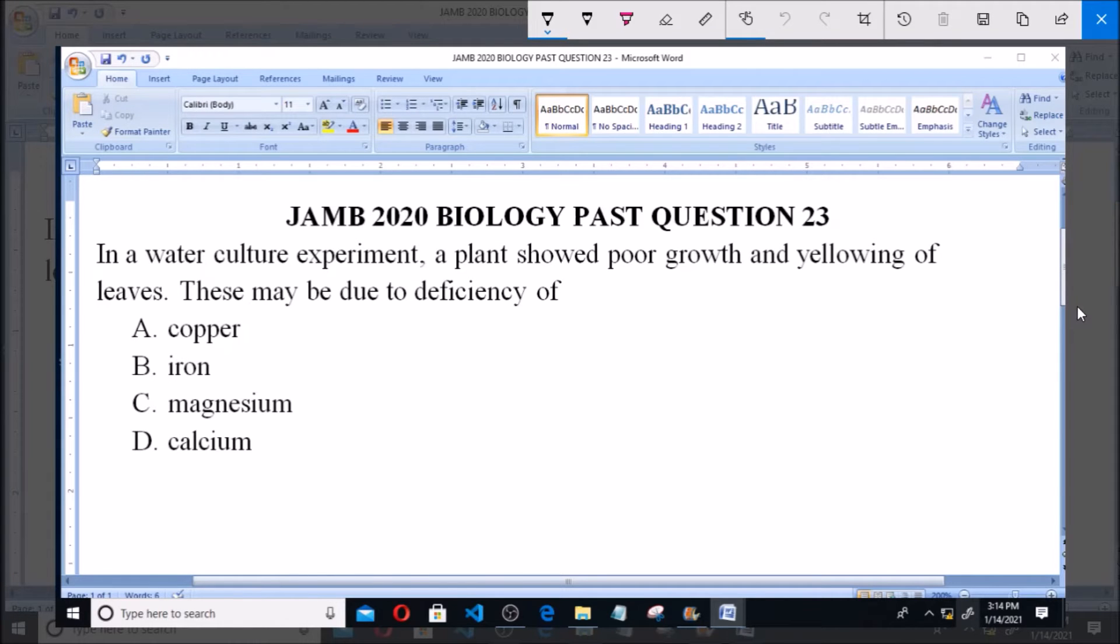Hello, good day and welcome. I'll be answering JAMB 2020 Biology past question 23. In a water culture experiment, a plant showed poor growth and yellowing of leaves. This may be due to deficiency of: A. copper, B.